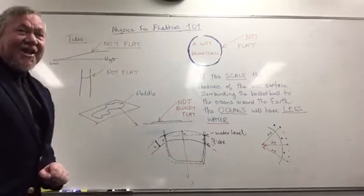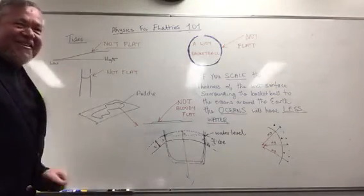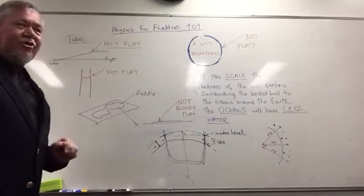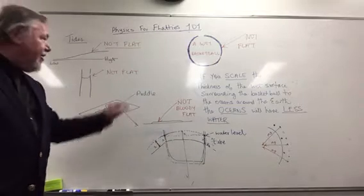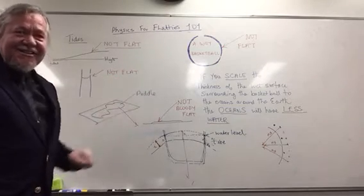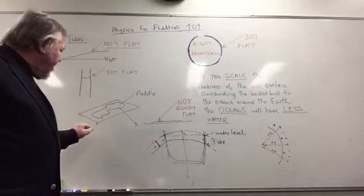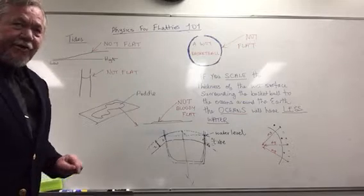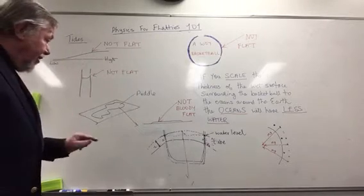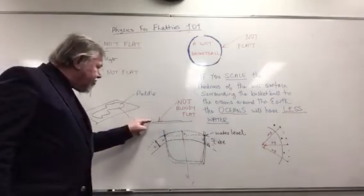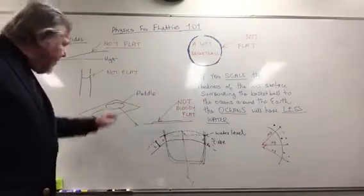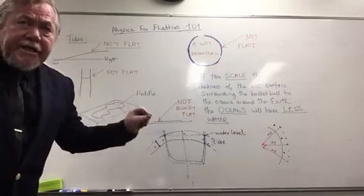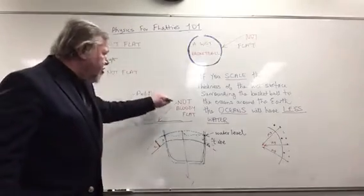Another example: inside a test tube we have the meniscus — it's not flat. And look at this puddle on the floor. If we look at the puddle side-on, we'll see that it's raised a little bit because it didn't flow everywhere — it's still in the shape of a puddle. So logically, it's not flat.